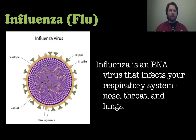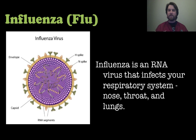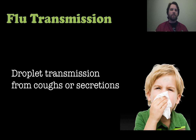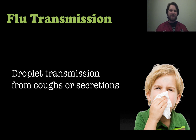So let's look at a couple of different types of viruses. First, the influenza virus, or flu virus, of the family orthomyxovirus. It's an RNA virus, meaning RNA is its genetic material. It infects your respiratory system, getting in through your nose or throat and then settling in your lungs. As you can see, it's a round virus — it has RNA segments, a capsid, and also a lipid envelope. How do you get the flu? It's usually by droplet transmission from coughs or secretions — somebody wipes their nose and touches something, or they sneeze and those droplets get airborne and people breathe them in. Flu transmission happens very quickly because it's pretty virulent.